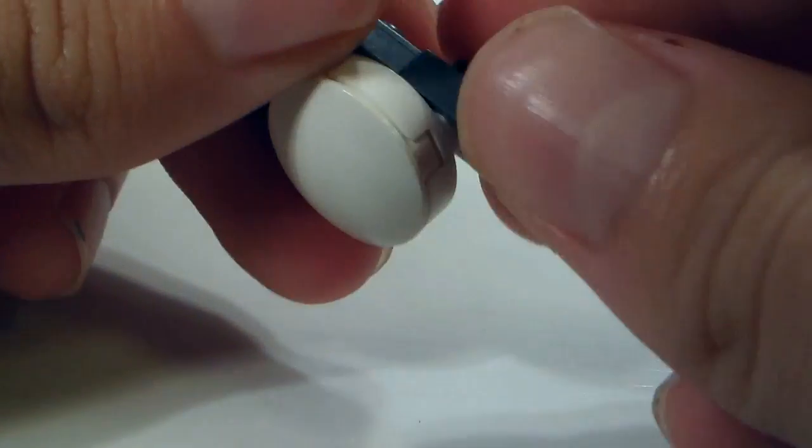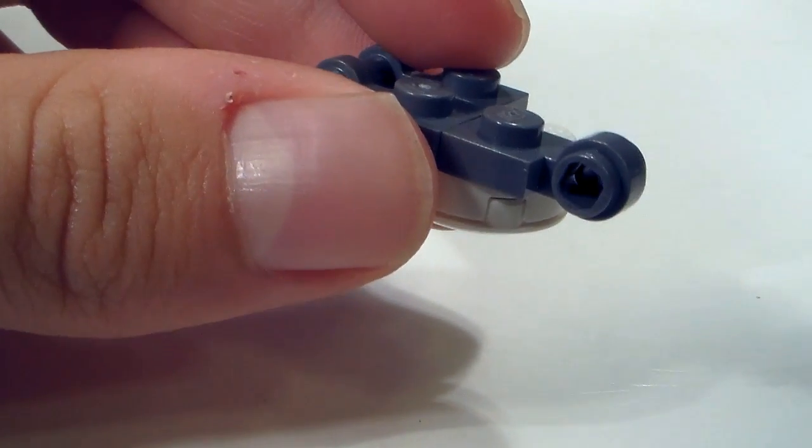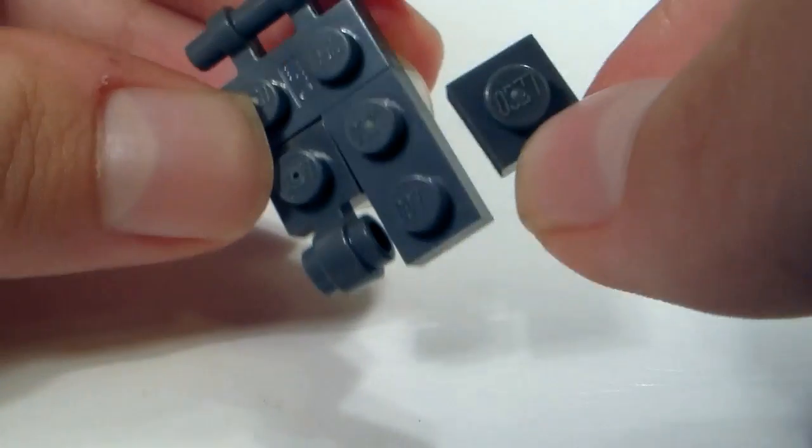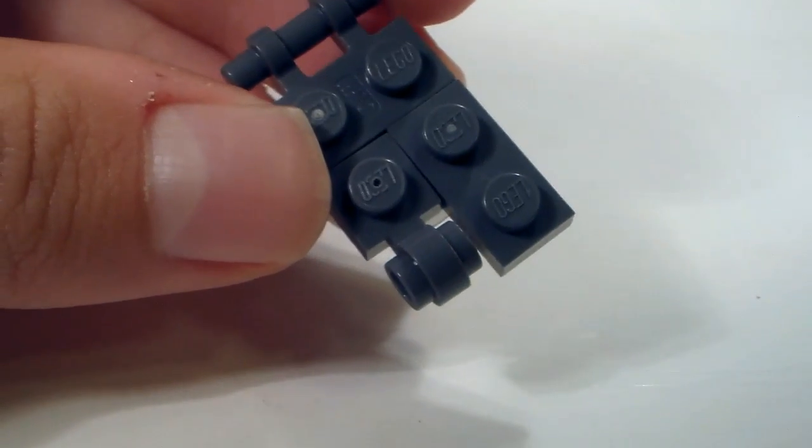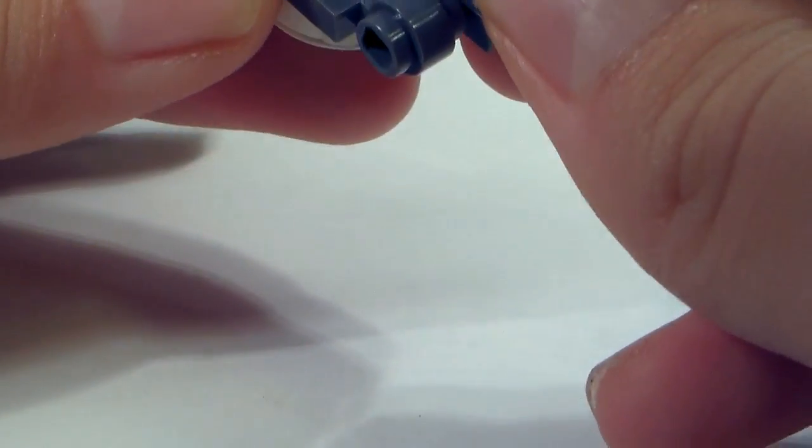Then you're going to take this 1x1 here and then this 1x2. Now technically in the video games they use one of these pieces, however it's not possible for this to stay in place unless you use the 1x2 plate.